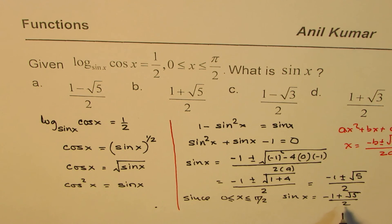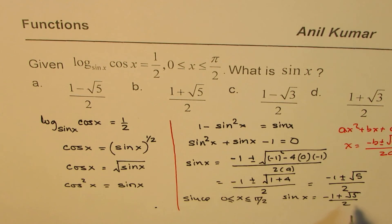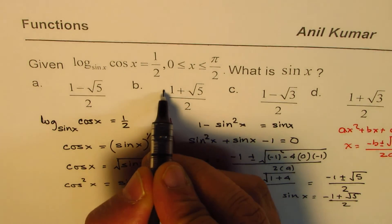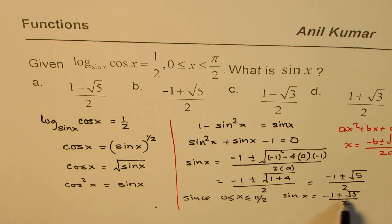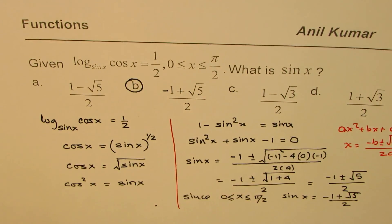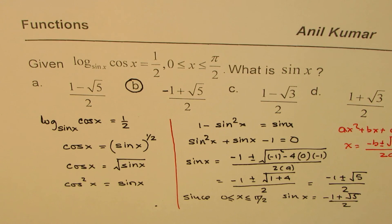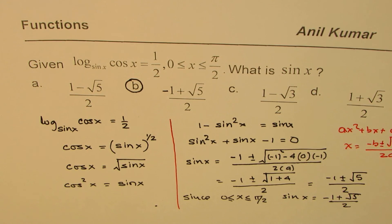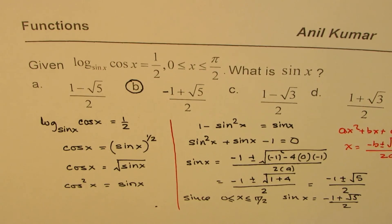So in this particular case, I think there's a typing error. I'll make this as negative 1 and choose minus 1 plus square root 5 by 2 as my answer. That is the correct answer for the given question. I hope that helps. Thank you and all the best.